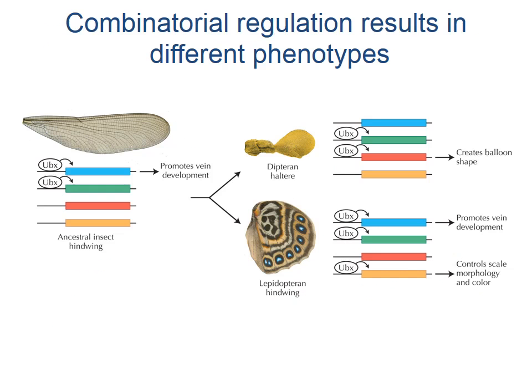Changes in the way that genes are expressed can also result in different phenotypes. As shown in this example, a simple change in the number of genes that are controlled by the same transcription factor results in the formation of the wing types that are characteristic of different insects.